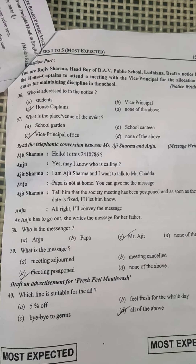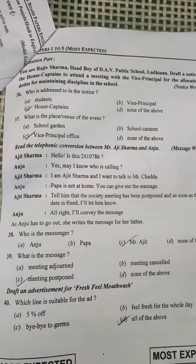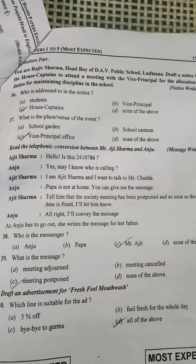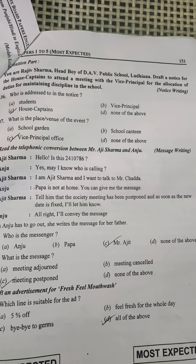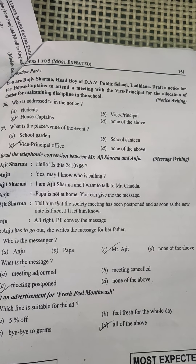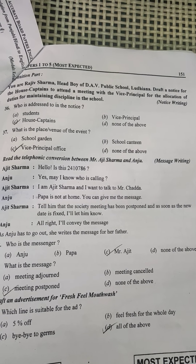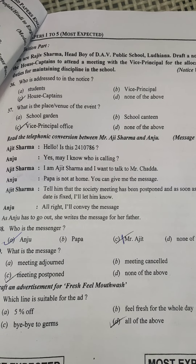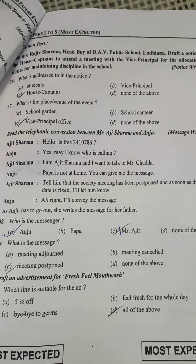Message section. Ajit Sharma called — he asked if this is the right number, Anju said yes. He asked to speak to Mr. Chadda, but Anju said her father is not available. He asked her to pass a message: the Society meeting has been postponed and a new date will be informed later. Anju agreed to pass the message. In the question: who is the messenger? — Anju is the messenger who is passing the message. What is the message? — The meeting has been postponed.